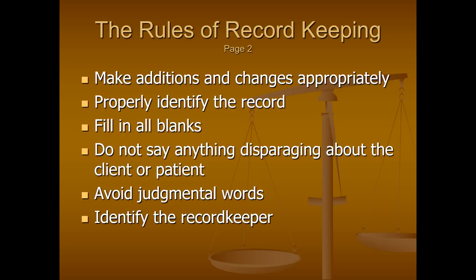Identify the record keeper. The person making the entry should be identified — most people use their initials. Somewhere in your office, keep a list of all your record keepers and their initials. Inevitably, if you're ever involved in a malpractice case, there will be that one entry by an employee who only worked for you three or four weeks, and you'll have a difficult time recalling that person's name in a deposition.